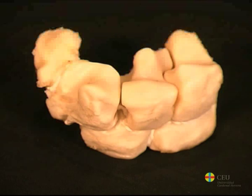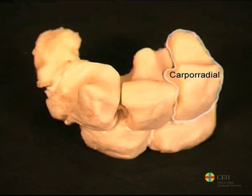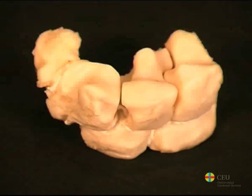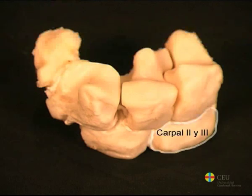In ruminants, the proximal row is also formed by the carporadial, intermediate, carpo ulna, and accessory bones. However, in the distal row, there are only two bones: the trapezoid capitatum, formed by the union of carpals 2 and 3, and the hamate.